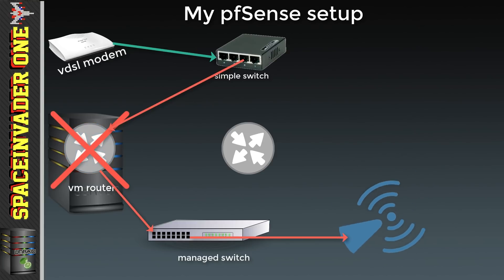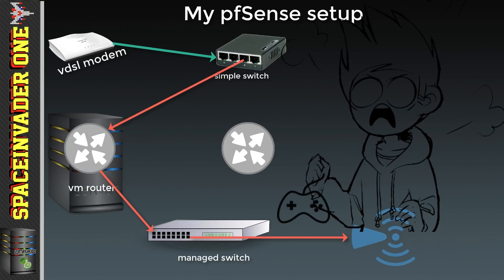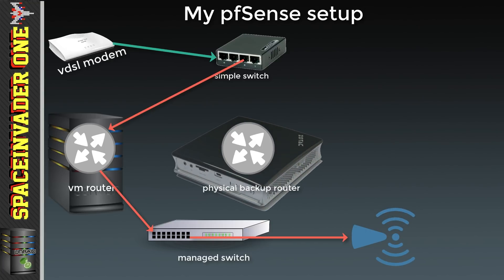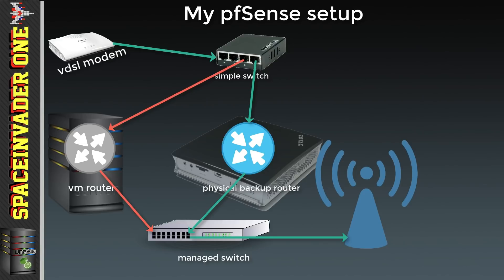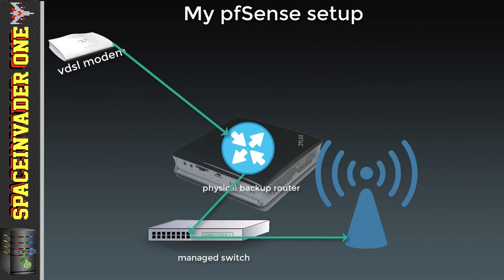But what happens if I turn off my server? Obviously the internet's going to go down and I'm going to get in trouble with my family. So to get around that, I have an old small form factor PC also running PFSense. This is off most of the time, but if my server shuts down, a script runs which sends a Wake-on-LAN packet, switching it on so it can take over the network duties. That way I feel I'm getting the best of both worlds. I could just have the physical box switched on all the time, but for my use case it really makes sense to use a VM.